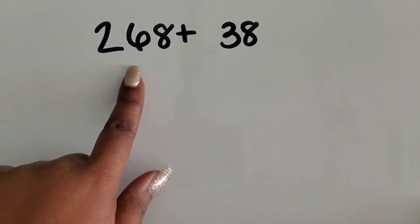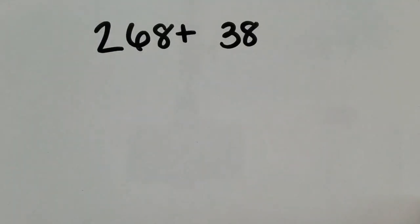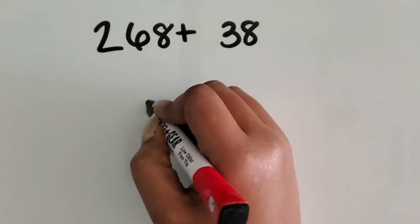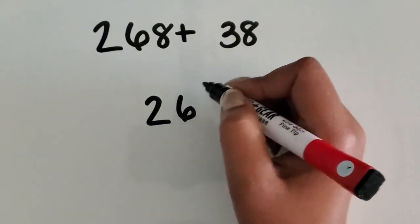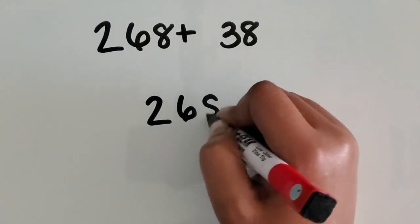We are going to add a three-digit number and a two-digit number together using the standard or traditional algorithm. I'm going to start by lining them up vertically based on place value.